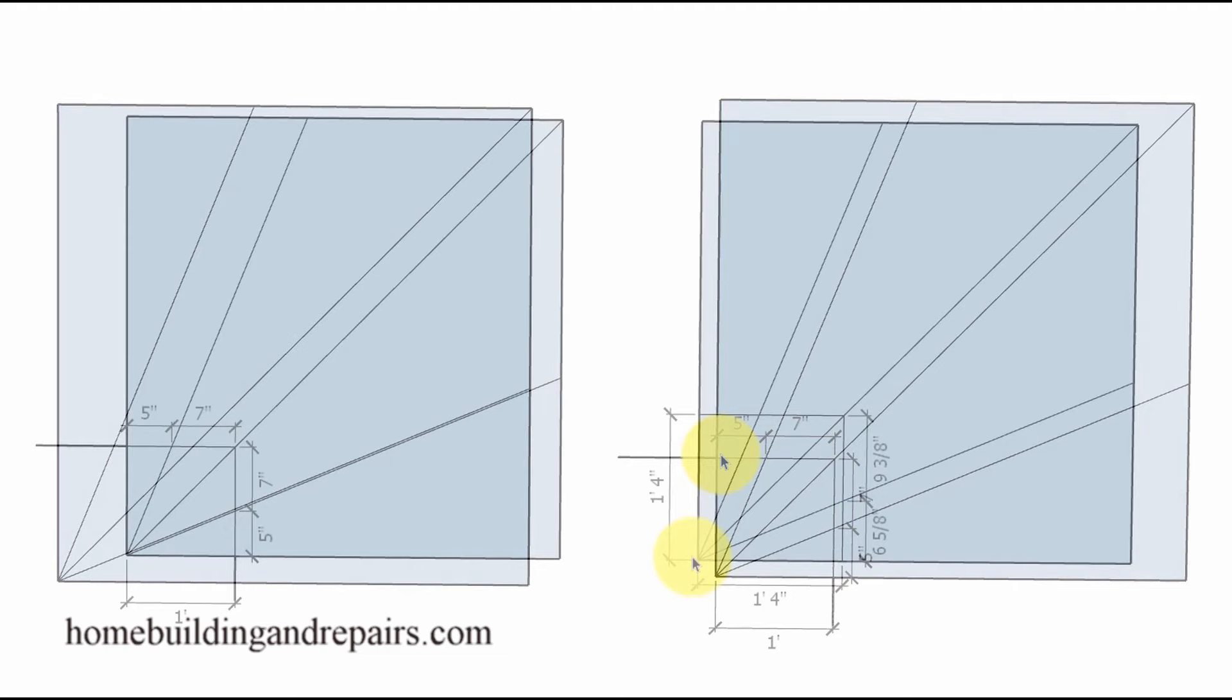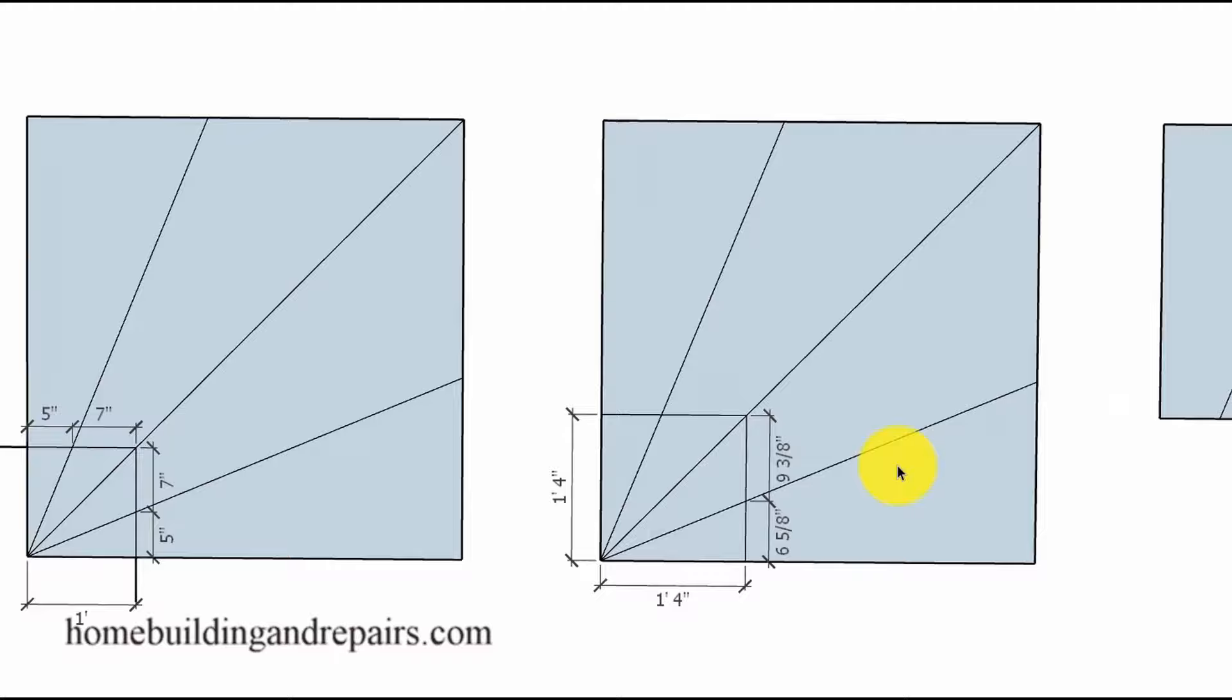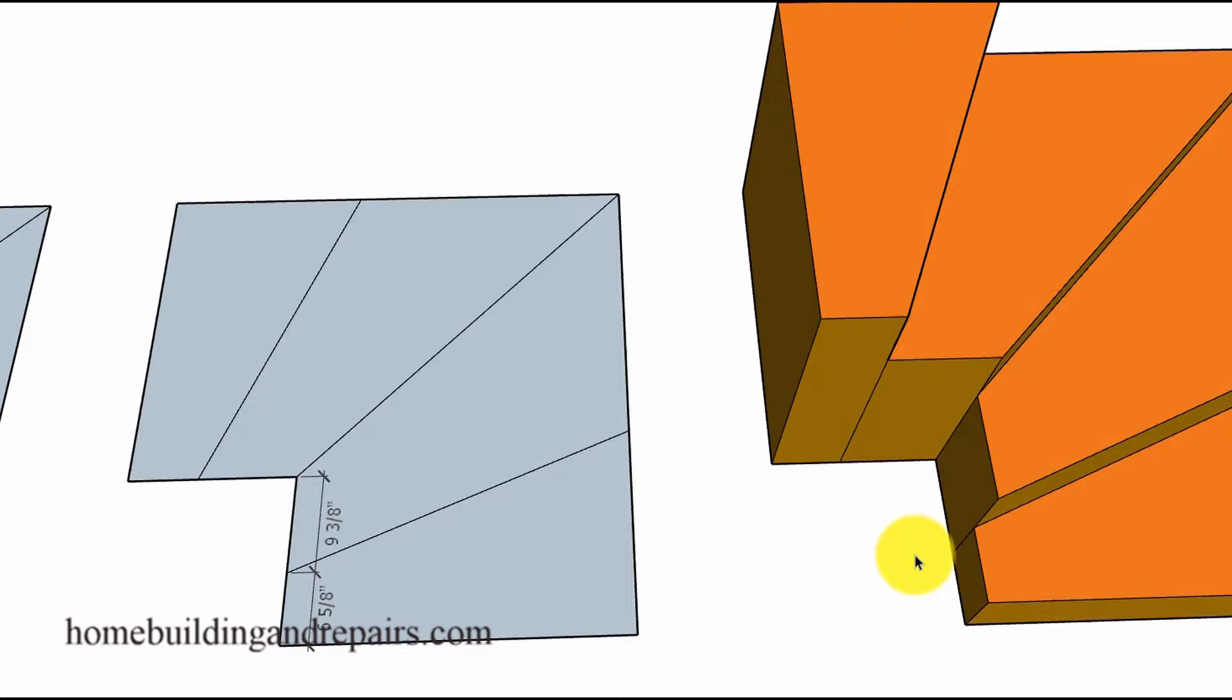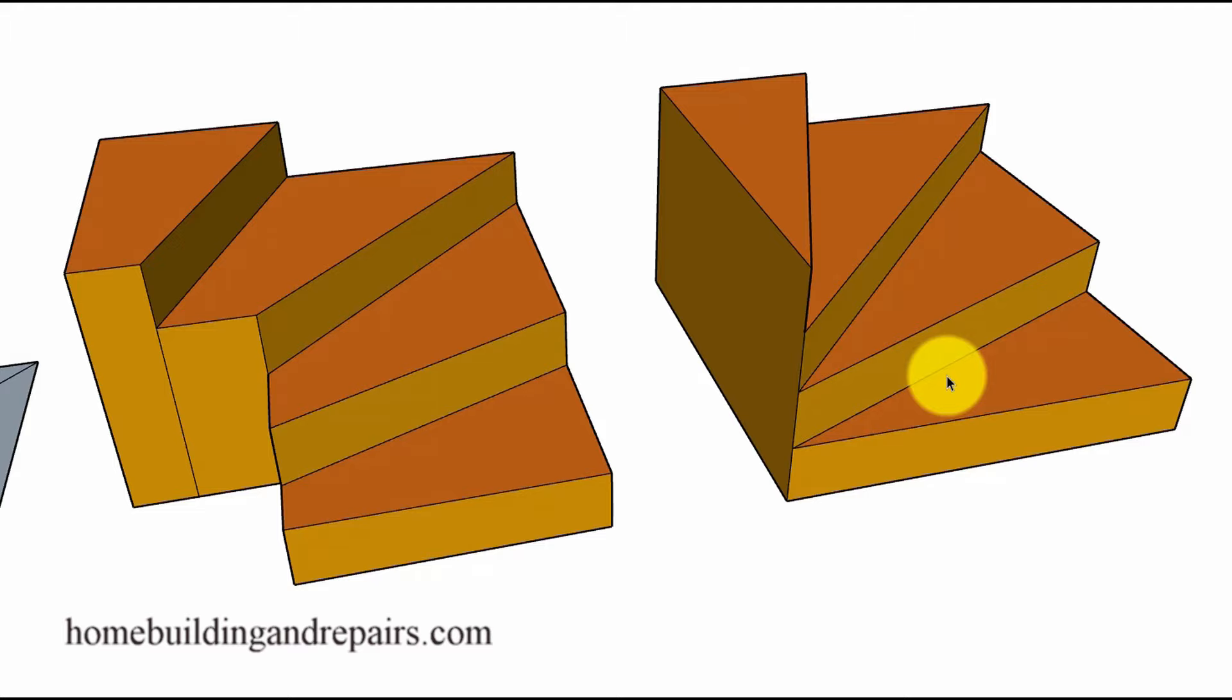So if I come in one foot for a walk line I'm going to have five inches here, seven inches, seven inches and five inches. So in order to get our six inch minimum inside measurement for the tread we're going to need to come in a little further and then make the stairway a little bit wider to create a safer stairway like this.